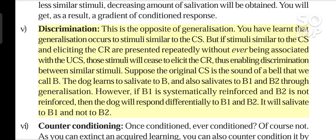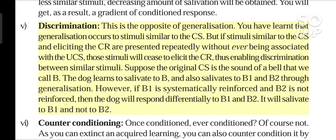Discrimination is the opposite of generalization. You have learned that generalization occurs to stimuli similar to the CS. But if stimuli similar to the CS and eliciting the CR are presented repeatedly without ever being associated with the UCS, those stimuli will cease to elicit the CR, thus enabling discrimination between similar stimuli. Suppose the original CS is the sound of a bell that we call B. The dog learns to salivate to B, and also salivates to B1 and B2 through generalization. However, if B1 is systematically reinforced and B2 is not reinforced, then the dog will respond differentially — it will salivate to B1 and not to B2.